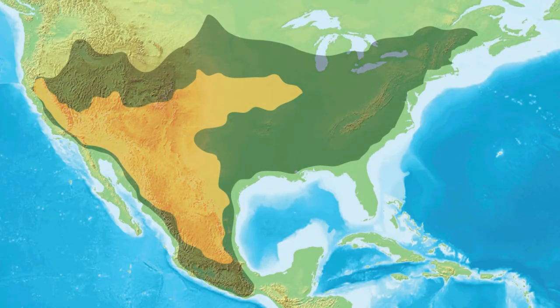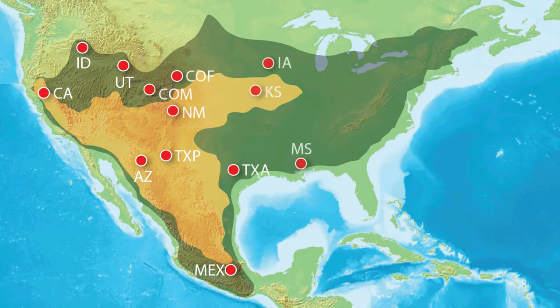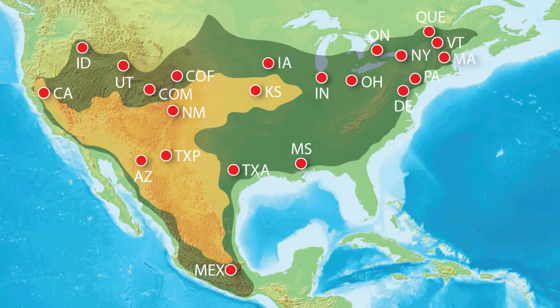Here is where this squash bee has spread to. I collected bees from all across this North American range and used genetic markers to reconstruct how and when these bees came to be so widespread. What I found out is that the bees spread their range alongside the spread of cultivated squash across North America.